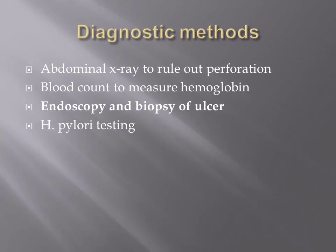Diagnostic methods include x-ray of the abdomen to rule out possible perforation, and blood count to measure hemoglobin level in case of anemia. The most important diagnostic methods are endoscopy and biopsy of the ulcer to rule out any possibility of cancer. H. pylori testing should also be conducted to detect and eliminate the organism.